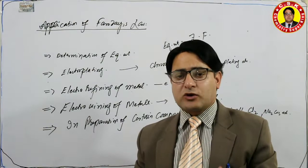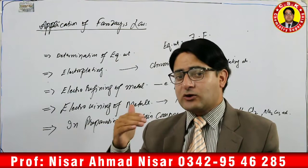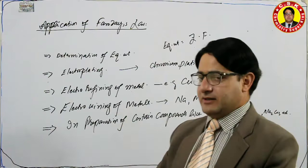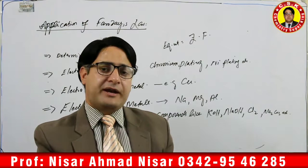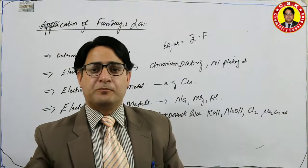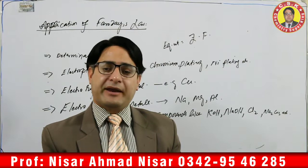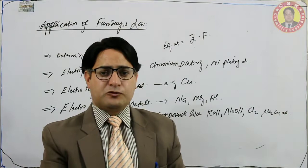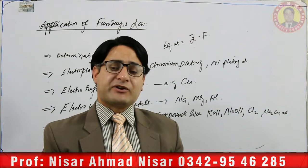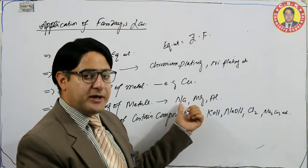Electro-refining is an electrolysis process. There is also a term electro-winning. The next application: Faraday's Law is used in electro-winning of metals. What is the difference between electro-refining and electro-winning? Electro-refining is the extraction of pure metal from impure metal by the process of electrolysis — for example, refining of copper. Electro-winning is the extraction of metal from its compound or ore by electrolysis — for example, extraction of sodium, magnesium, and aluminium.